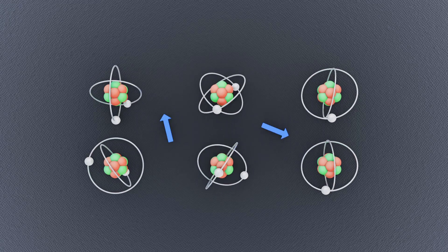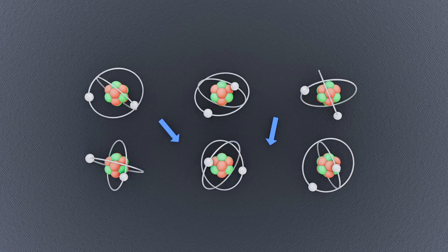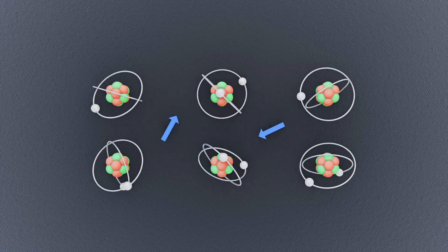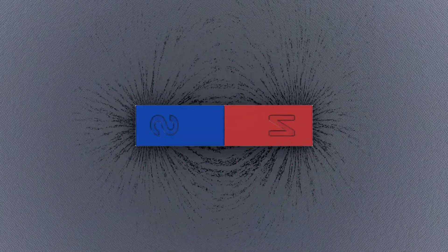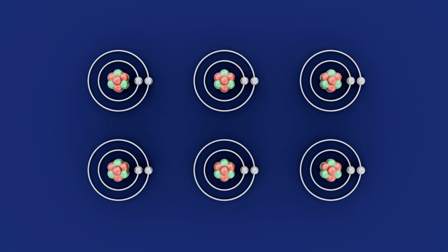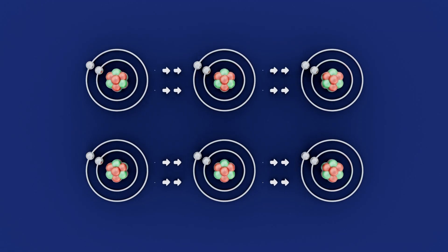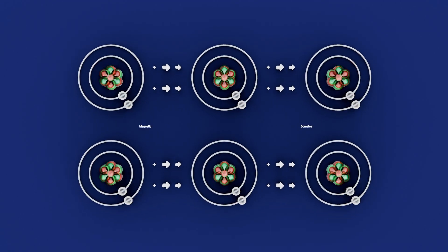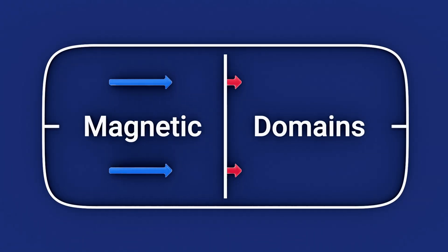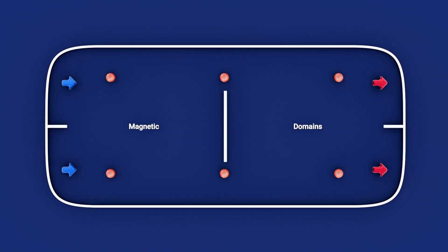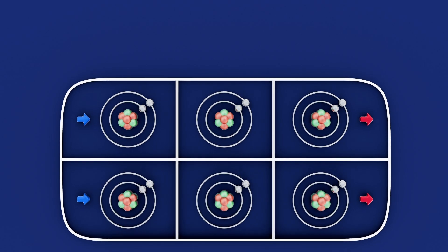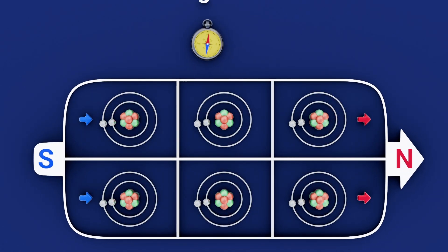In most materials, electrons spin in random directions, cancelling out any magnetic effect. But in magnetic materials, many electrons spin in the same direction, forming what is known as magnetic domains. When these domains align, the material becomes magnetized, generating a measurable magnetic field.